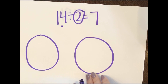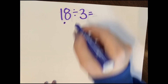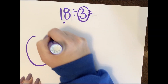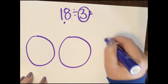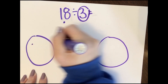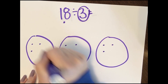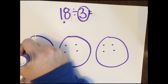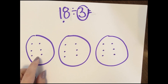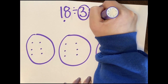Let's clear our workspace. Our next problem is 18 divided by 3. Put a dot under the 18, circle the 3, and draw 3 groups. Counting out 18 pieces and distributing them one at a time into each group, we end in that last group. Counting the first group: 1, 2, 3, 4, 5, 6. So 18 divided by 3 equals 6.